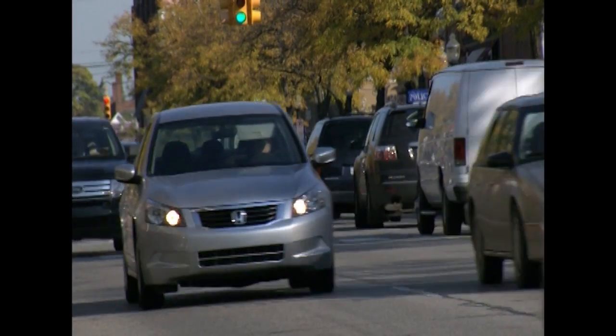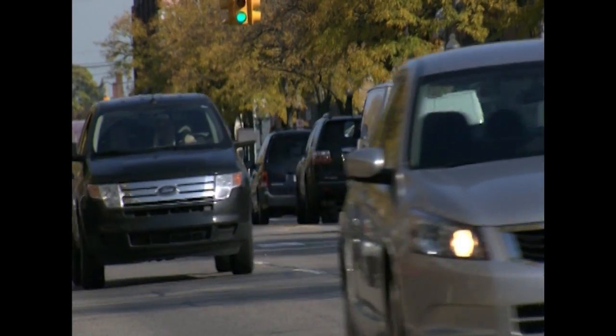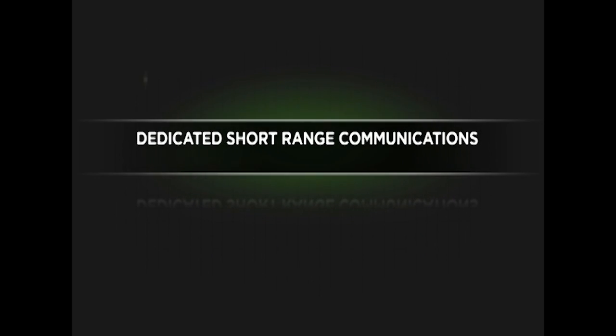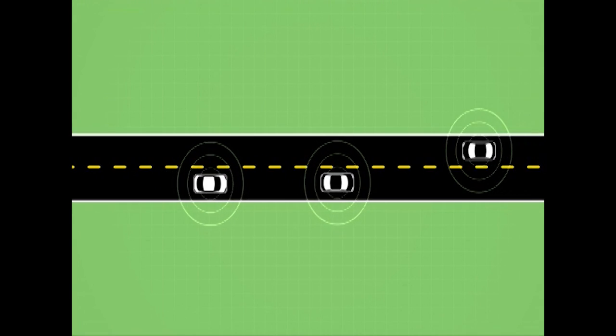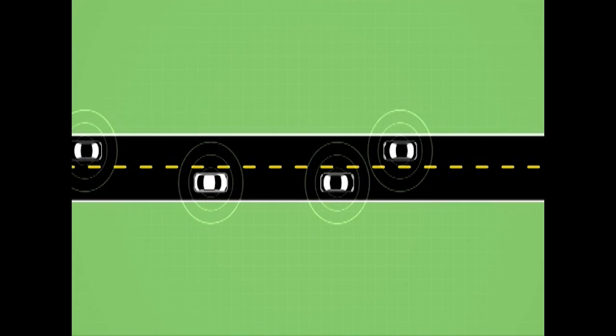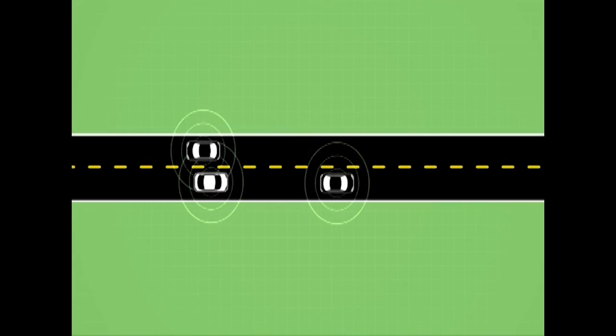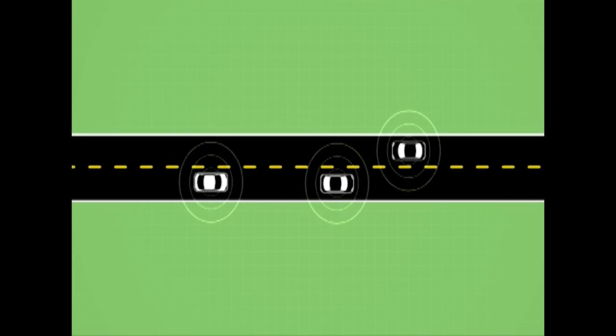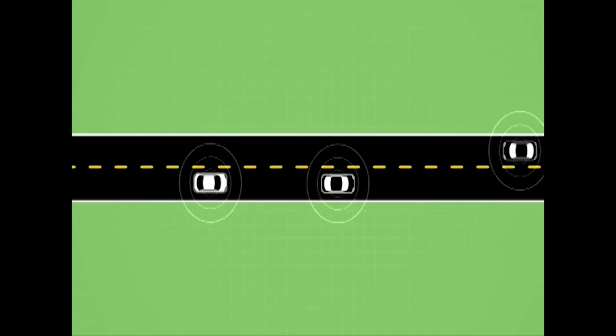What makes V2V communication work is a wireless protocol similar to Wi-Fi called Dedicated Short-Range Communications, or DSRC for short. When DSRC is combined with GPS technology, the result is a low-cost V2V communication system that provides a 360-degree view of similarly equipped vehicles within communication range.